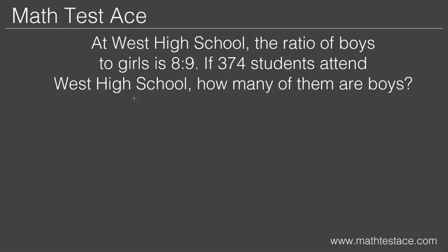The problem says: at West High School, the ratio of boys to girls is 8 to 9. If 374 students attend West High School, how many of them are boys? What does it mean to have a ratio of boys to girls that's 8 to 9?